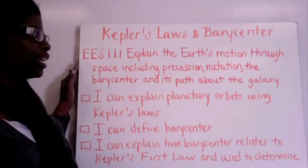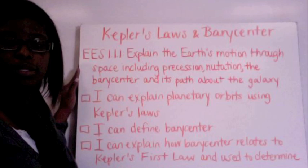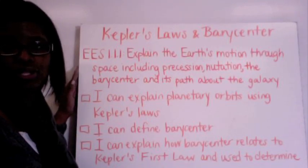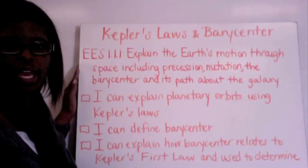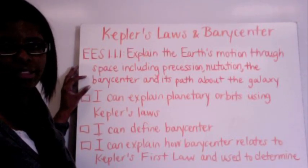So our essential standard that matches is we need to explain the motion through space, explain the Earth's motion through space including precession, nutation, the barycenter, and its path about the galaxy. And we're going to focus on the barycenter and the Earth's path about the galaxy.